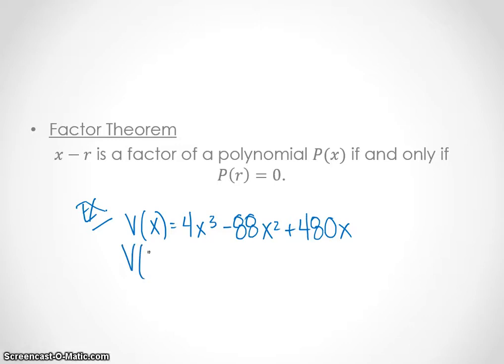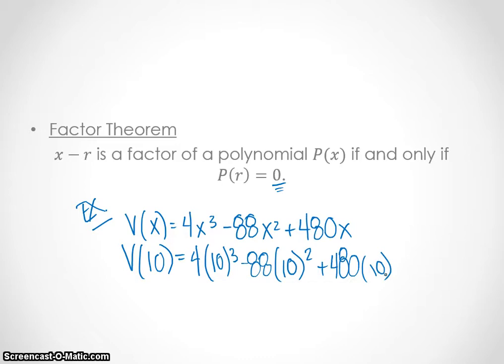Let's actually do V of 10, and we should get this side equaling 0 like the factor theorem says. So let's plug 10 in. So we get 4 times 10 cubed minus 88 times 10 squared plus 480 times 10. So let's actually figure out what that is. So 4 times, now 10 cubed is going to be 1,000 minus 88. 10 squared is 100. 8,800 plus 480 times 10 is going to be 4,800.